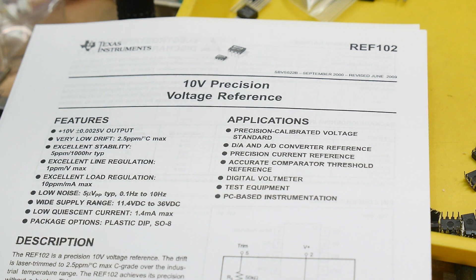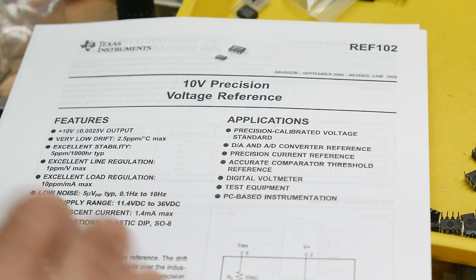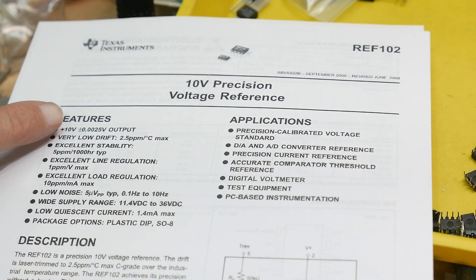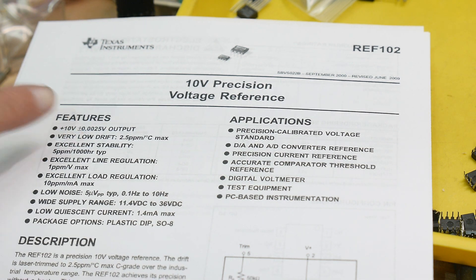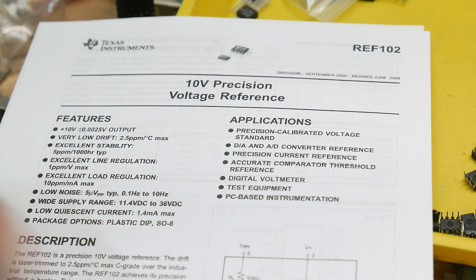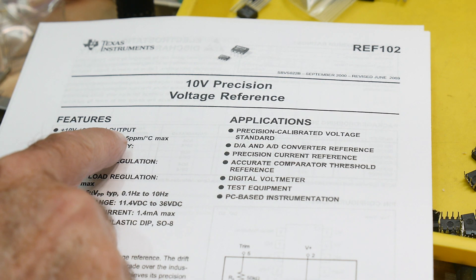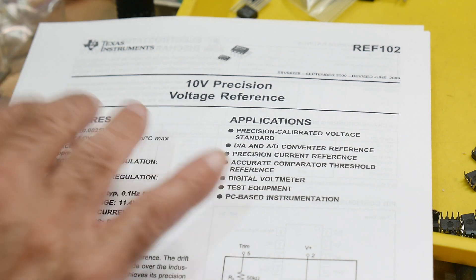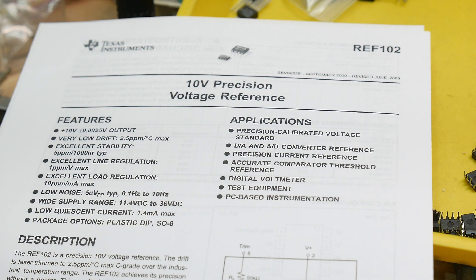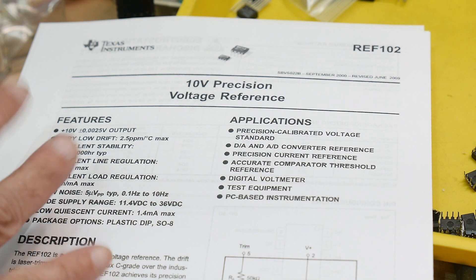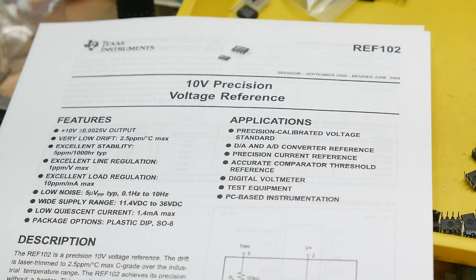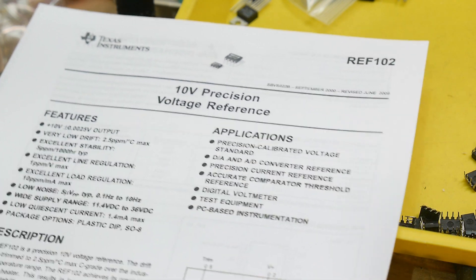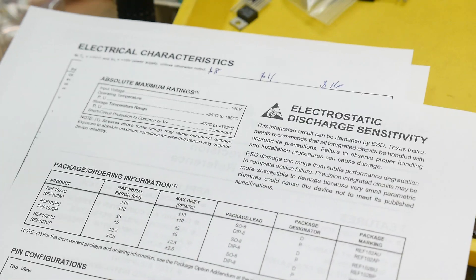Instead of five volts, it's 10 volts. So 10 volts is really nice, but look at the spec: 10 volts plus or minus 0.0025. Much better, much better spec. The drift is 0.25 parts per million, so much, much better, like five times, almost four times better drift. Much, much better starting. So this is a much, much better part.